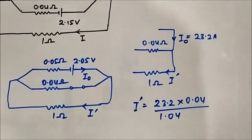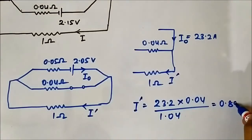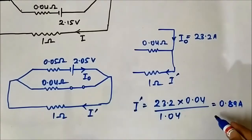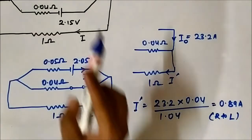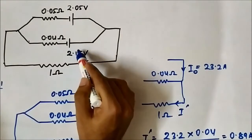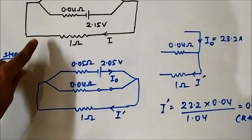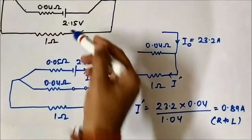I have posted videos on current division rule and voltage division rule — you can check them in the circuit theory playlist. The value of i dash comes to 0.89 ampere, flowing from right to left. This is the contribution due to the 2.05 volt source considered alone.